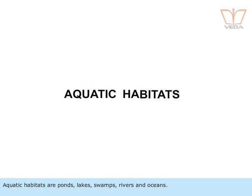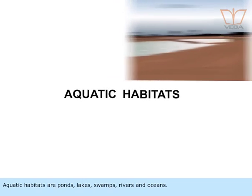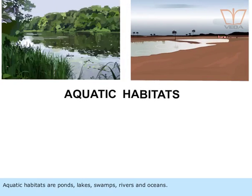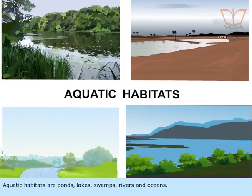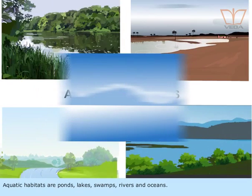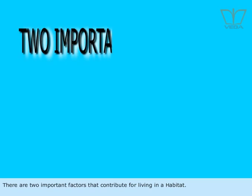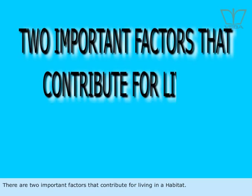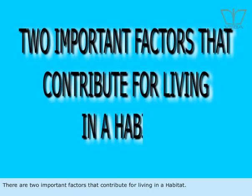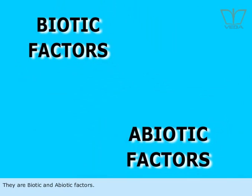Aquatic habitats are ponds, lakes, swamps, rivers, and oceans. There are two important factors that contribute to living in a habitat. They are biotic and abiotic factors.